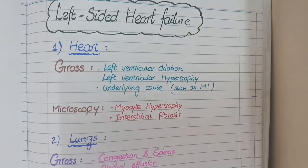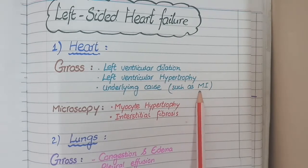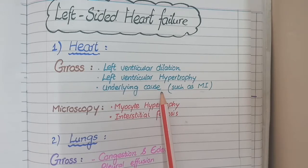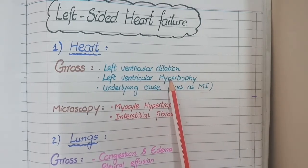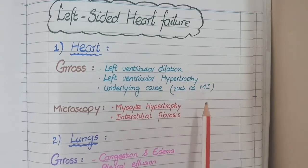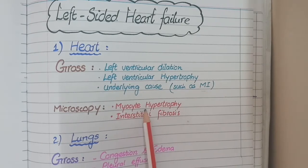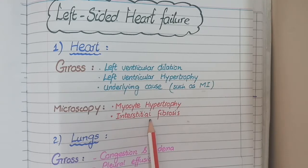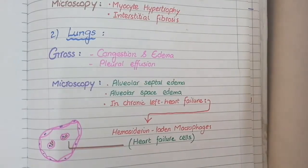You also see left ventricular hypertrophy, which means an increase in the thickness of the walls of the left ventricle. Thirdly, in cases of left-sided heart failure — which in almost all cases occurs due to myocardial infarction — you will see infarcted areas replaced by scar or fibrous tissue. So overall, you see left ventricular dilatation, left ventricular hypertrophy, and scar tissue. Similarly, on microscopy you see myocyte hypertrophy, meaning an increase in size of cardiac myocytes, and interstitial fibrosis, which occurs in infarcted or damaged areas.